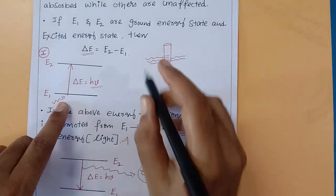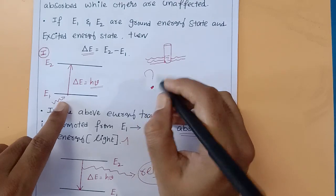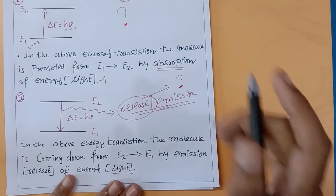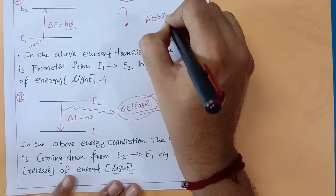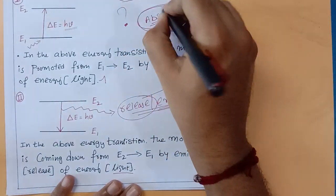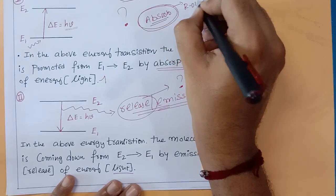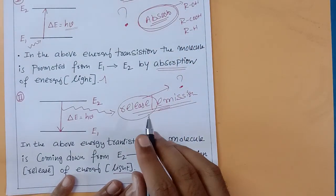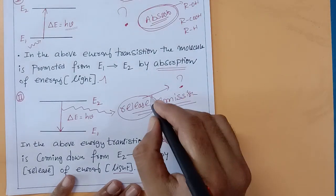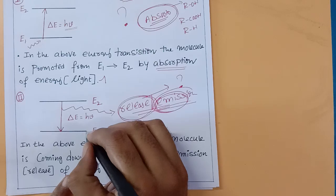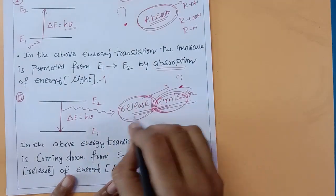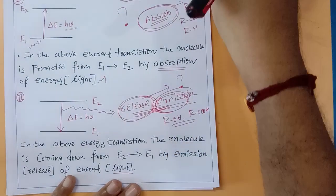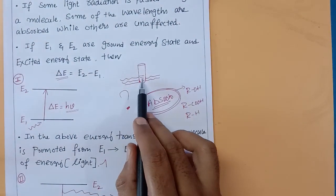In spectroscopy there are two types of measurements. We measure what radiation is absorbed — by knowing what radiation is absorbed, we can identify whether a compound is an alcohol or a carboxylic acid. Similarly, in some cases we measure what radiation is released or emitted. By measuring the emitted energy, you can also identify the compound — whether it is an alcohol or carboxylic acid.